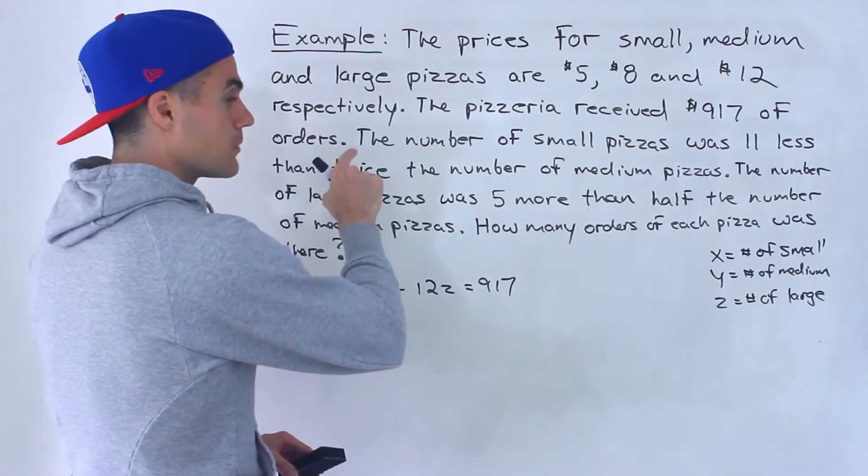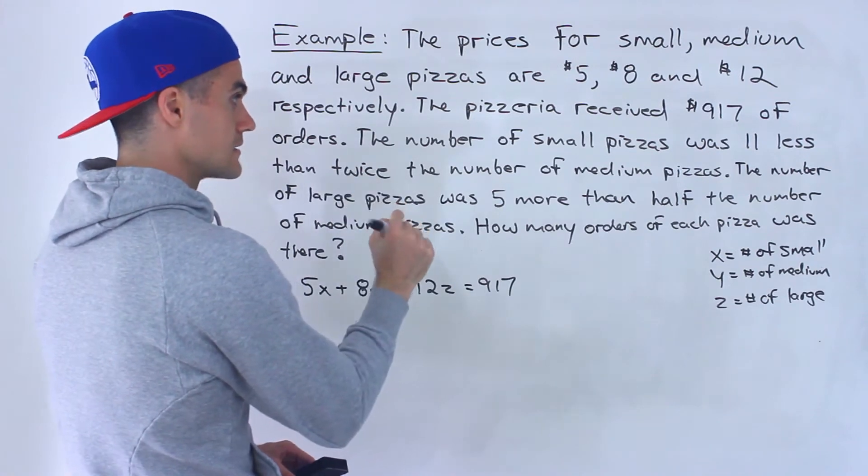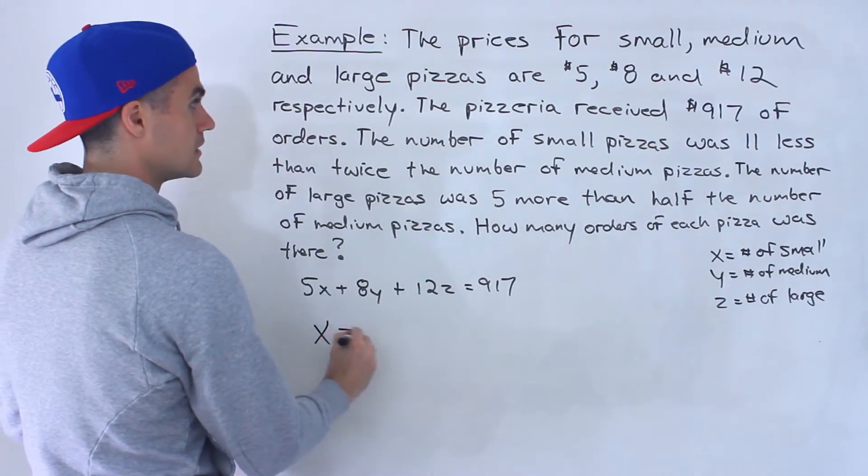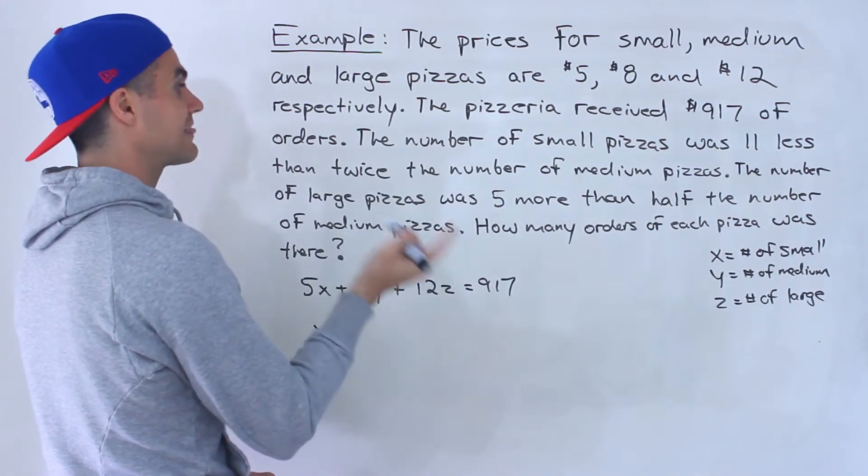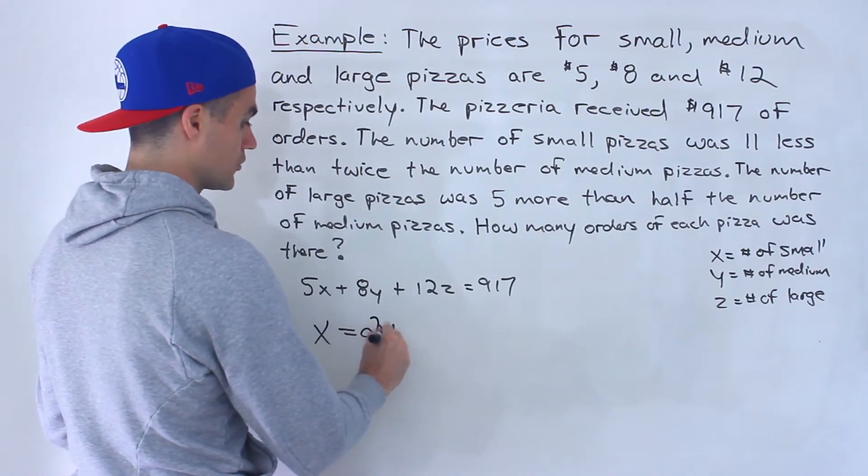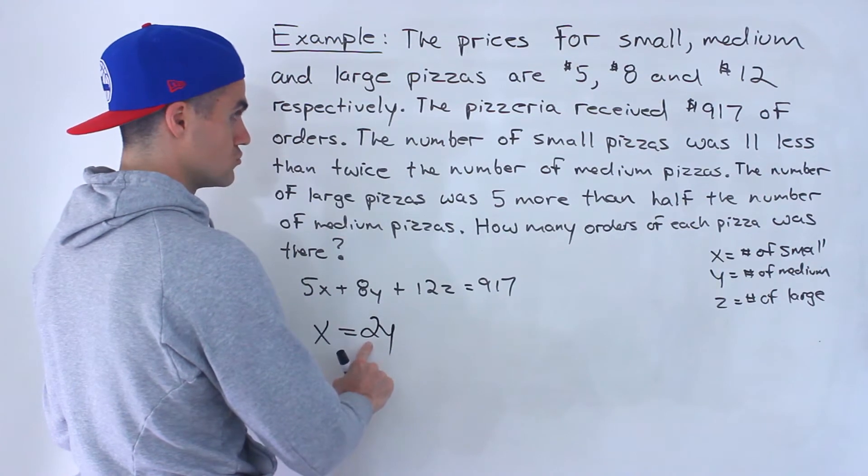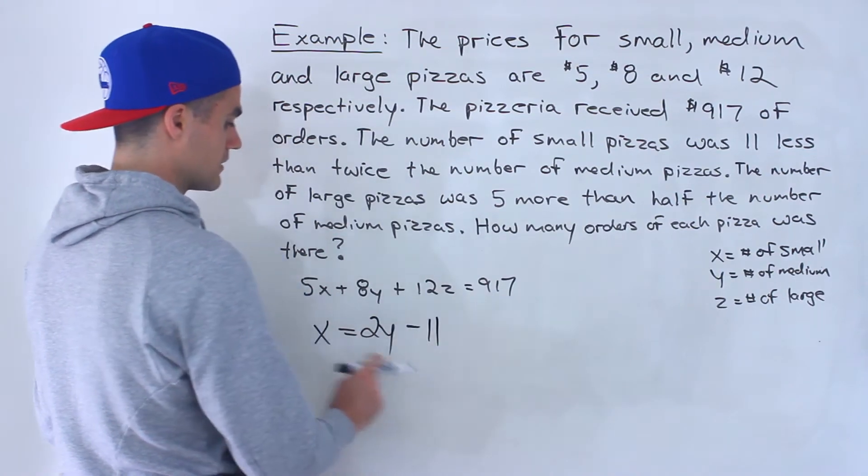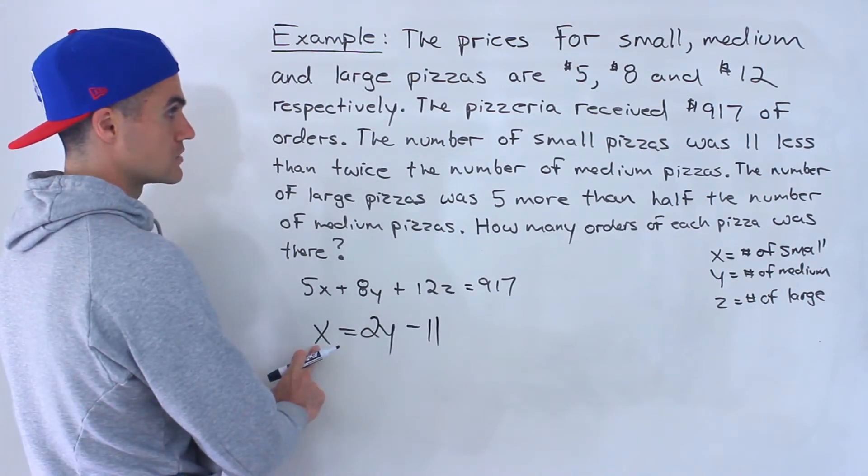Let's keep reading. So the number of small pizzas, so that would be x, was 11 less than twice the number of medium pizzas. So if we take the number of medium pizzas, multiply it by 2, subtract 11, that would give us the number of small pizzas.